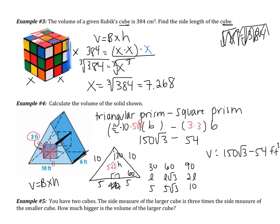To summarize: I found the volume of the triangular prism — area of the triangle times the height of the prism (6) — and then subtracted the square prism in the middle that was cut out — area of the square times the height of the prism (6). This gave a final answer of 150 root 3 minus 54 feet cubed.